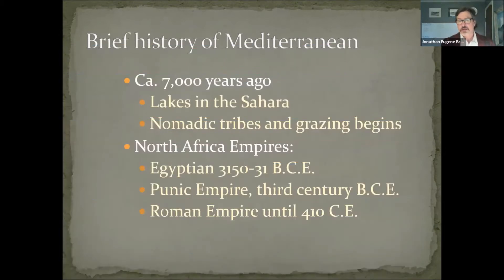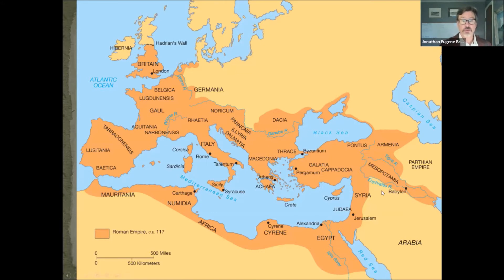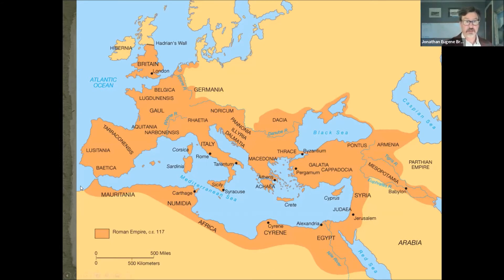And then, of course, the Roman Empire itself — first the Republic, then the Empire — lasting until the 5th century. Arguably, Rome does not fall; it moves. Here's Rome, and here is Byzantium, which becomes Constantinople, the main city of the Byzantine Empire. The whole Eastern Roman Empire survives the invasion of the Goths and Visigoths into the western part. At its largest extent in 117 CE, the Roman Empire surrounded the entire Mediterranean, including Egypt and the old Punic Empire — all folded into Rome.